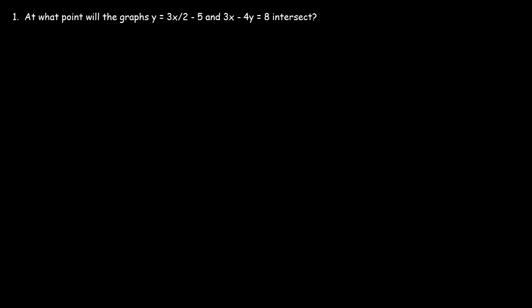But first, let's solve it as a system of equations. So right now we know that y is equal to 3 over 2x minus 5. So what we're going to do is we're going to take this and substitute it into y in the second equation.